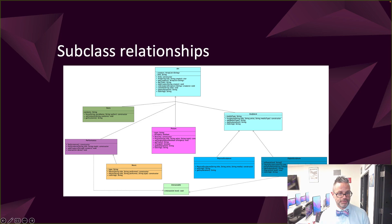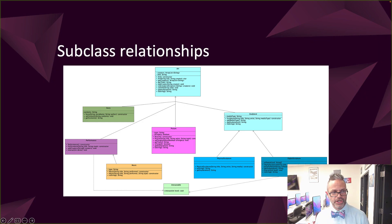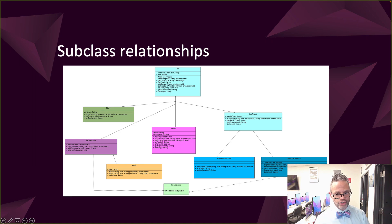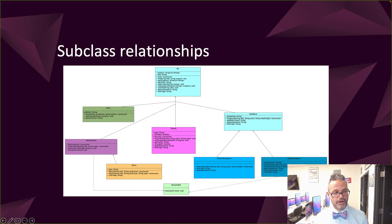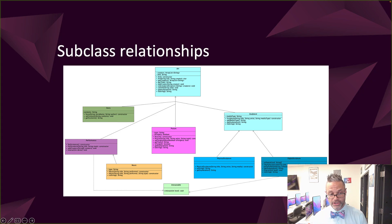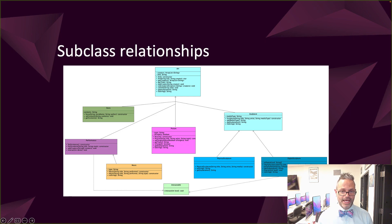Here's the subclass relationship in more detail from the UML. Music is a subclass of Performance, Performance is a subclass of Art, Story is a subclass of Art, Picture is a subclass of Art. Physical Sculpture and Digital Sculpture are subclasses of Sculpture, which is itself a subclass of Art. Sculpture is another abstract class with two subclasses. Music inherits from Performance, so Music is a Performance and therefore also an Art.